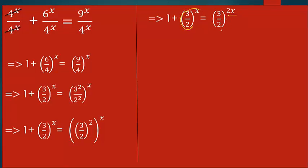So you have this: 1 + (3/2)^x = (3/2)^(2x). We have (3/2)^x in both terms, so we are going to replace this with a variable. Let (3/2)^x = y.